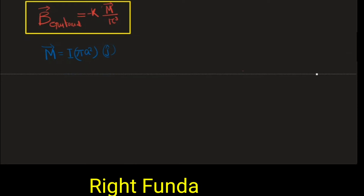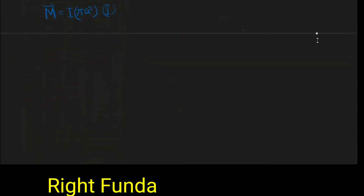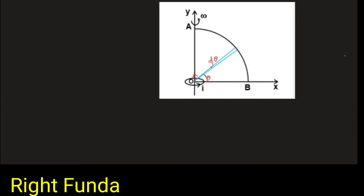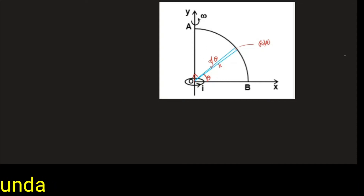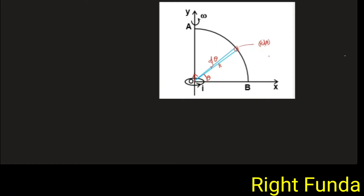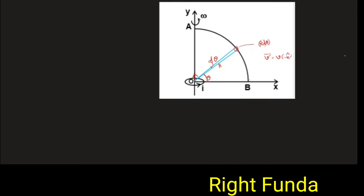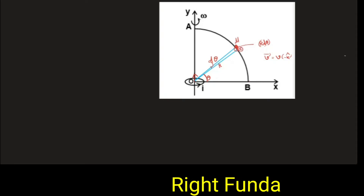Since the magnetic field is variable at every point, we take a small element on the quarter ring at an angle theta subtending a small angle d-theta at the center, so the element length is R dθ. This ring is rotating, so the velocity vector of this element is in the minus z-direction. The induced EMF across this small length is given by dε = B · (dL × v), where dL is along the ring in the XY plane and v is in the minus k-hat direction.